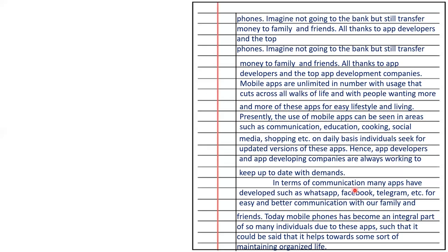In terms of communication, many apps have been developed such as WhatsApp, Facebook, Telegram, etc. for easy and better communication with family and friends. Today, mobile phones have become an integral part of many individuals due to these apps, such that it could be said that they help towards maintaining an organised life. Likewise, you can write your views on mobile apps in any way.